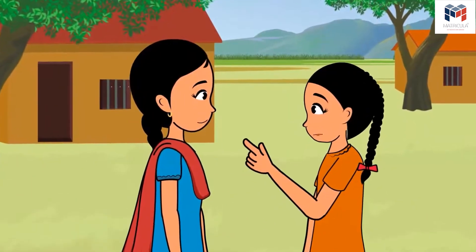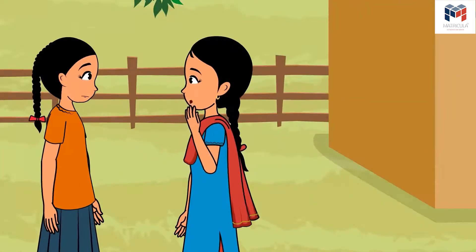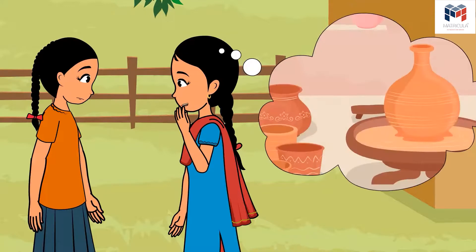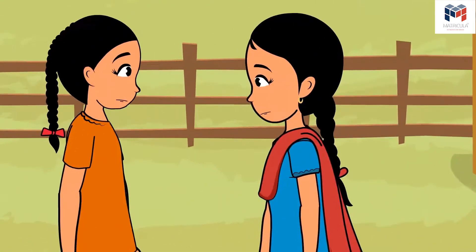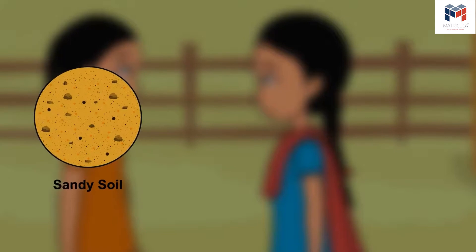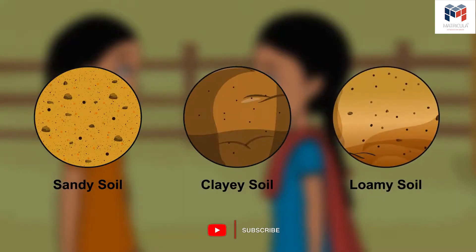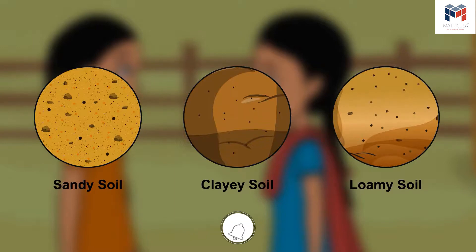'Hey Minu, you are talking just like a teacher — just a pair of glasses is missing!' 'Minu, what kind of soil do you think Shamu Kaka uses to make pots?' 'Let us go and find out!' So friends, both girls did such an interesting experiment. We can divide soil into three types: sandy soil — it has more loose particles; clay soil — it is sticky and has small particles; loamy soil — it has a balance of small and big particles. We will meet soon in the next video.